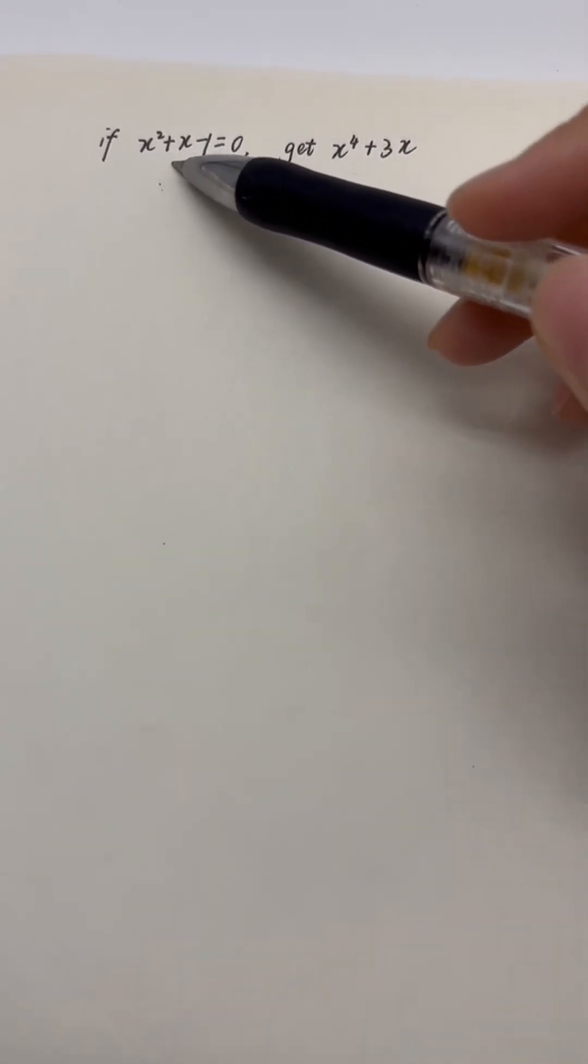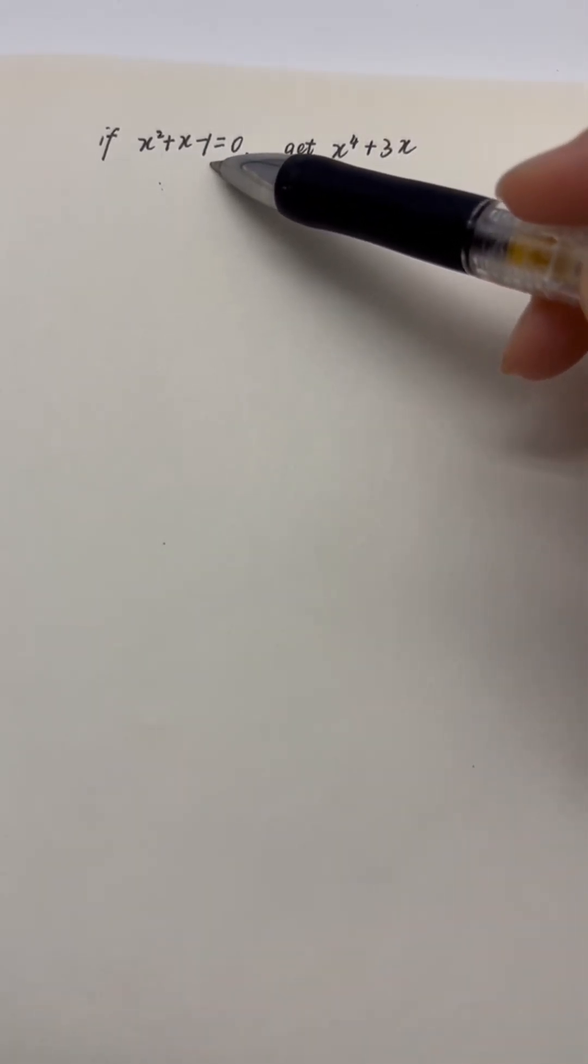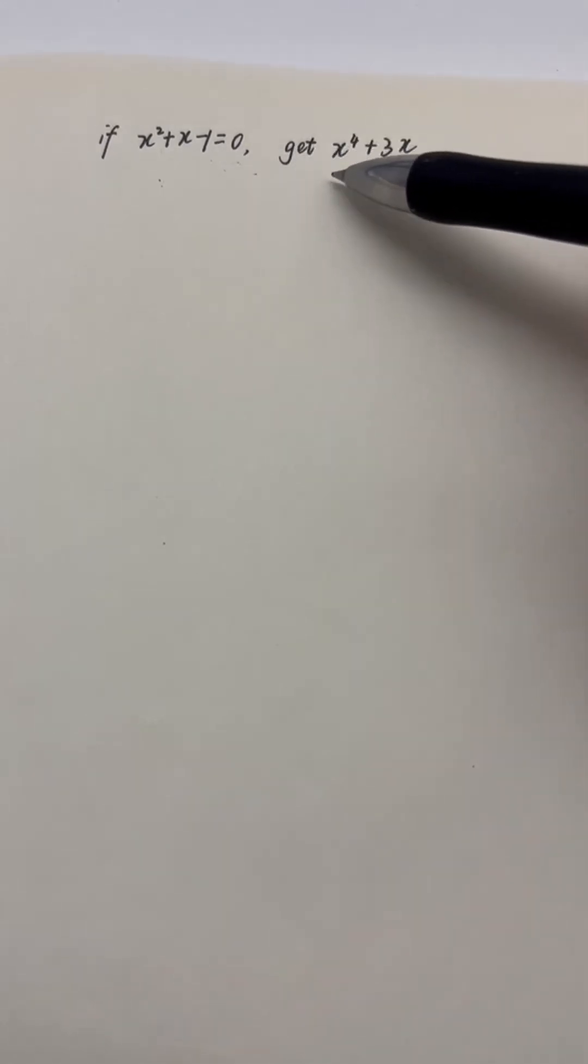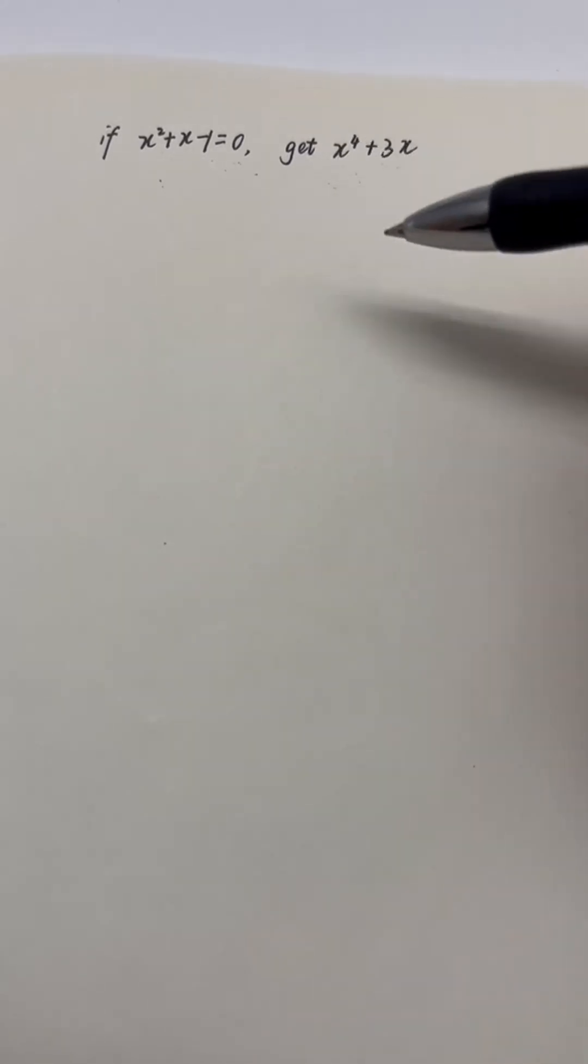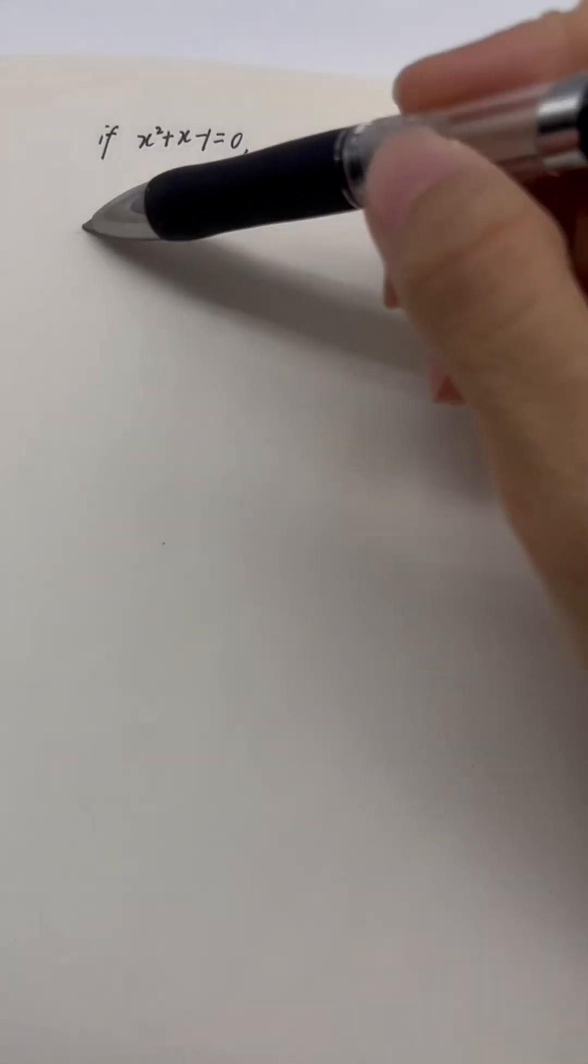If x squared add x subtract 1 equal 0, how can we get x to the power 4 add 3 times x? So we should have the substitute mind here.